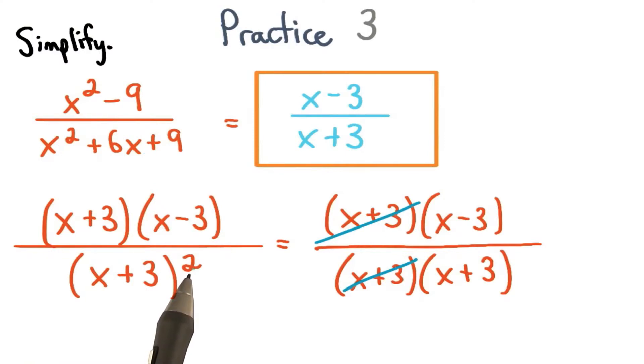We know for this square exponent, we really write this factor twice. From here, it's easy to see we have a common factor of x plus 3 in the numerator and the denominator. So those simplify to equal 1.